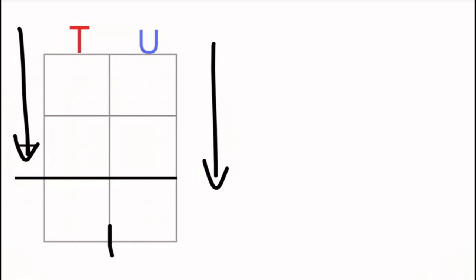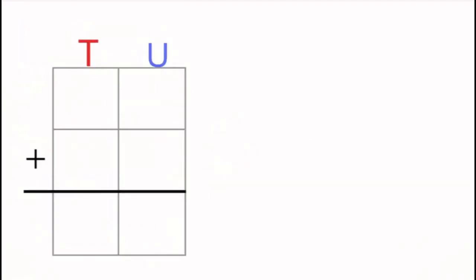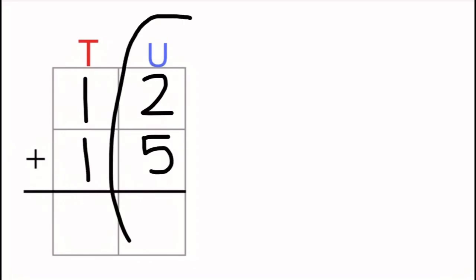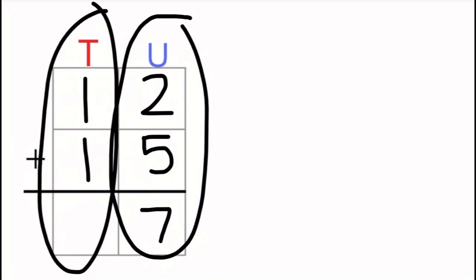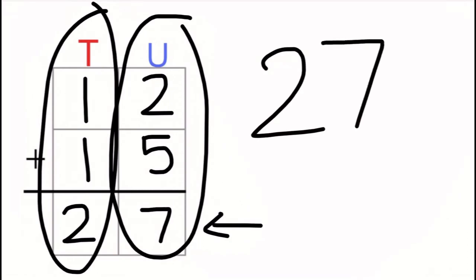But also remember that we can only fit one number in each box. Then, we can put both of our numbers in the sum into our columns. For the number 12, we know that it has one ten and two units. For 15, we know that it has one ten and five units. We then start by adding all of the units together, which we know will equal seven, and all of the tens, which we know equal two. This number at the bottom is the answer to our sum. We know that this is 27.